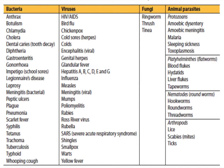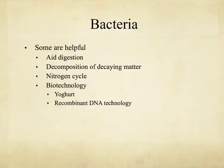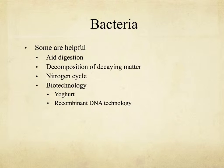This is a table straight out of your textbook. I would learn probably five or so examples of both bacteria and viruses, and also know a few common parasites and fungi. Some bacteria are helpful — they can aid digestion, decompose decaying matter, are part of the nitrogen cycle, and you often find good acidophilus bacteria in yogurt.